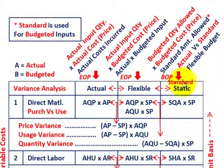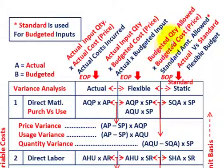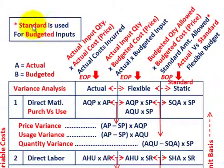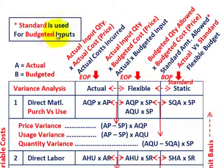The first thing we need is the standard or static amount, which is really the budgeted quantities allowed times the budgeted cost or price — in this case for fixed overhead. When we talk about budgeted quantities and budgeted costs, those are standards the company sets. It's really the budgeted inputs, the standard amount allowed.